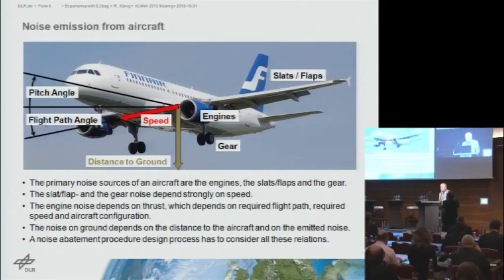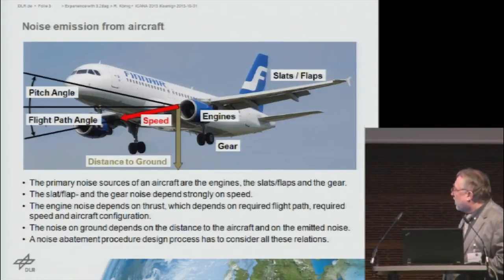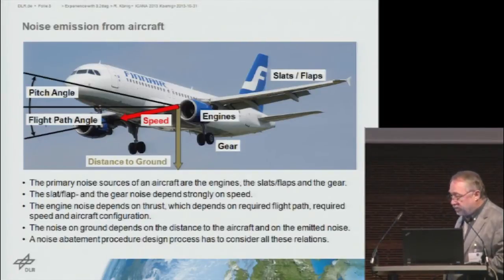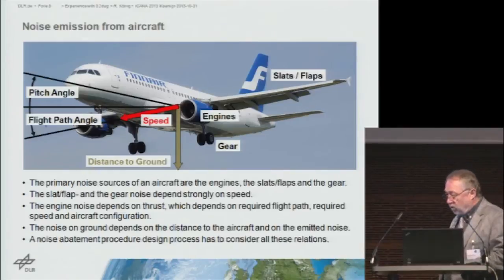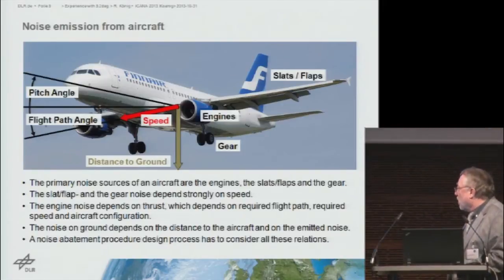You've seen this picture in different versions yesterday. I'd like to briefly come back to that by enumerating the biggest sources of noise: the lift system, engine, flaps, and the gear. Even though the noise generated by the slats, flaps, and engine gear depends largely on speed, the engine's noise depends greatly on the thrust level — or engine speed — and the thrust level depends on the flight path required.